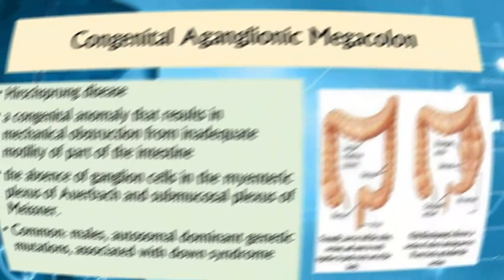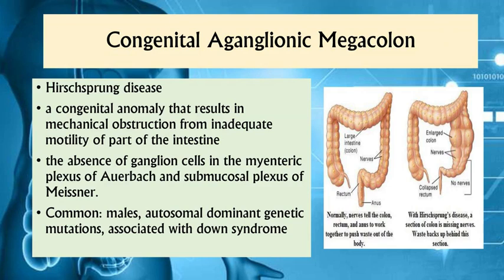The next condition is congenital aganglionic megacolon, also known as Hirschsprung disease. It is a congenital anomaly resulting in mechanical obstruction from inadequate motility of part of the intestine — a birth defect in which some nerve cells are missing in the large intestine, so the child's intestine cannot move stool and becomes blocked. The most common cause is the absence of ganglionic cells in the myenteric plexus of Auerbach and submucosal plexus of Meissner, which are responsible for regulating peristaltic waves toward the anal opening.